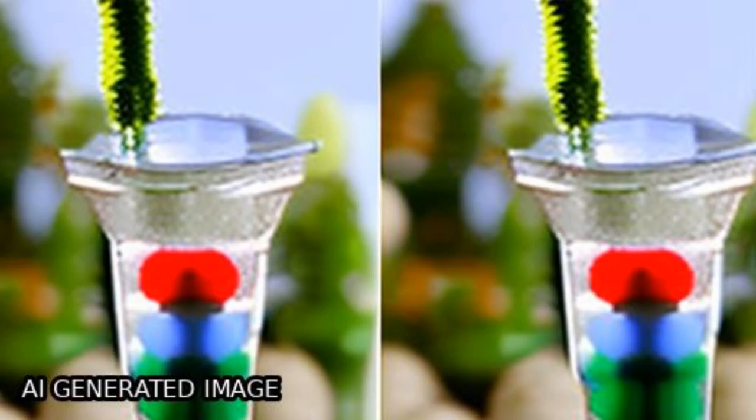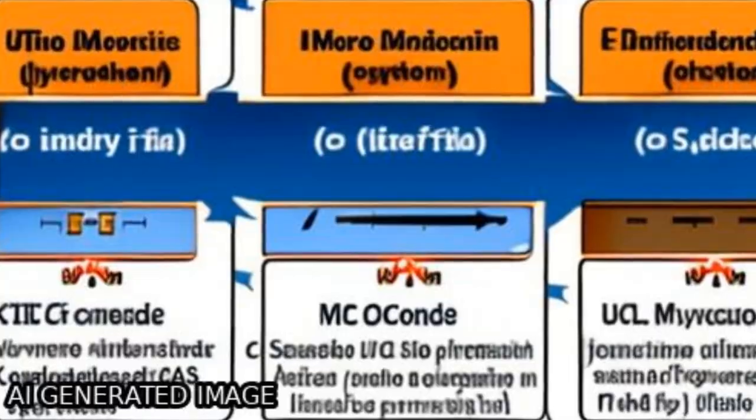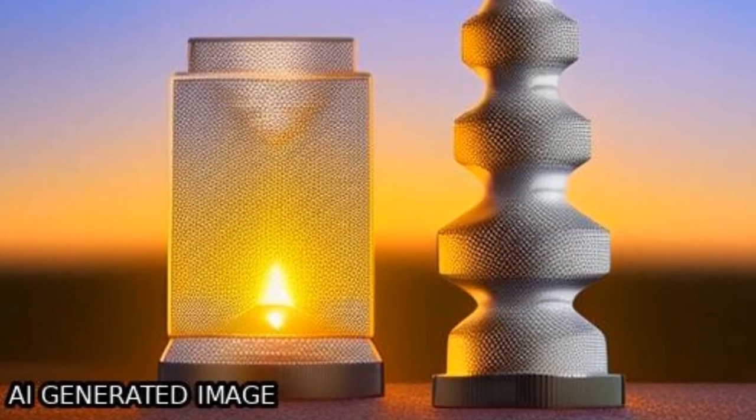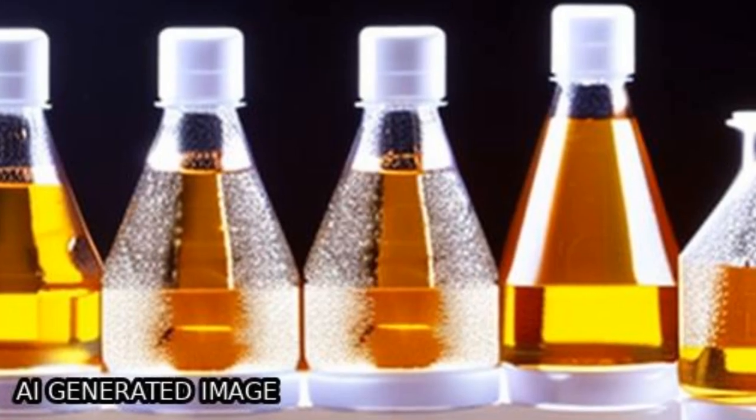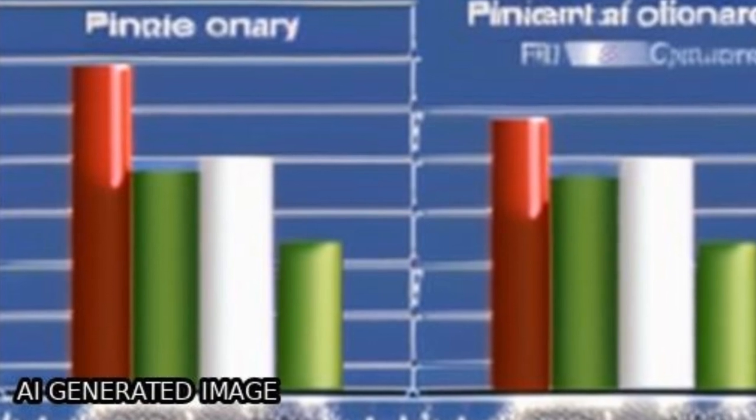The ternary nanocatalysts could also reduce the generation concentration of O3 and NOx in the process of alpha-pinene catalytic oxidation, and the synergy effect between TiO2, Fe2O3, and CoK was better than that of other combinations.